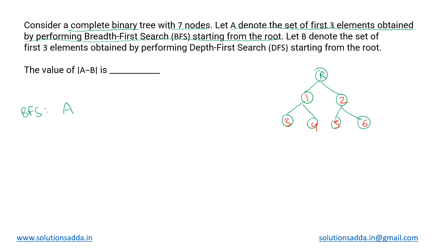Starting from root r and performing a BFS, what is the set of the first three nodes we will get? Definitely r will be one of them. Since BFS goes level by level, the current level must be completed first. So after r we visit node one, then node two. This forms our set A of the first three elements obtained by performing a BFS.